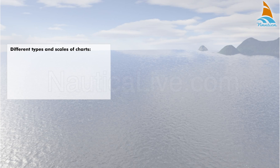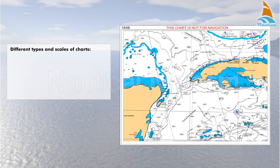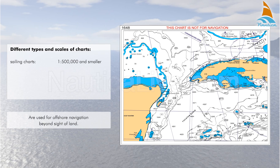Here are the different types and scales of charts. Sailing charts, where the scale is 1 to 500,000 and smaller, are used for offshore navigation beyond sight of land.